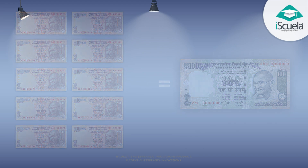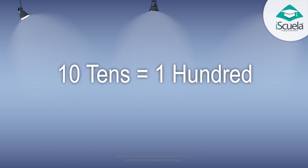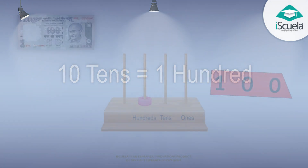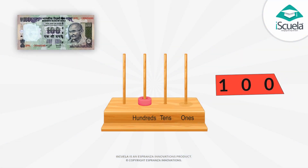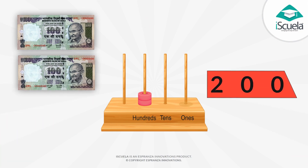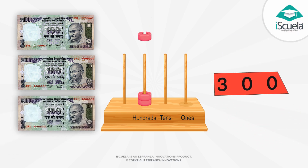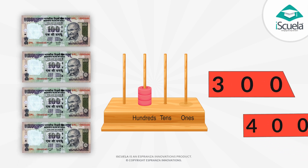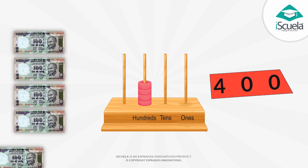Ten tens is equal to one hundred. One hundred, two hundred, three hundred.